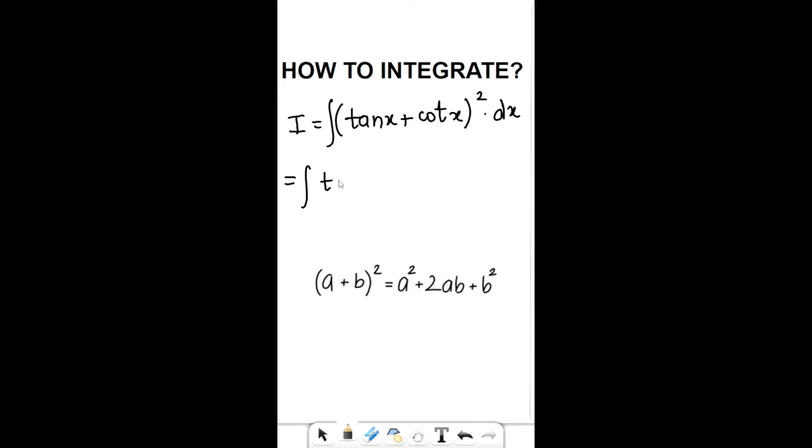The formula is a² + 2ab + b². So in this case it will be tan²x + 2·tan x·cot x + cot²x. We'll apply the brackets and dx.